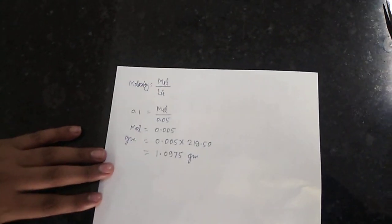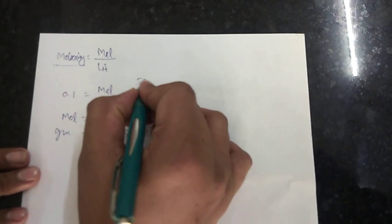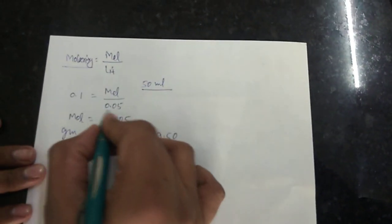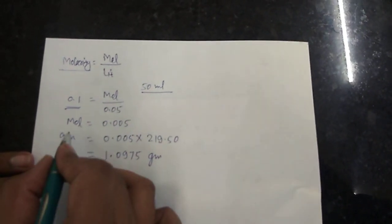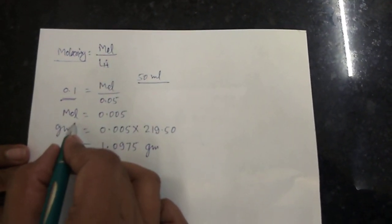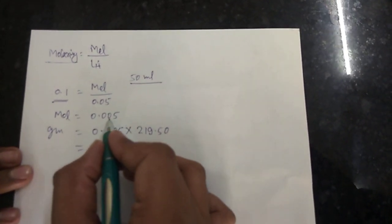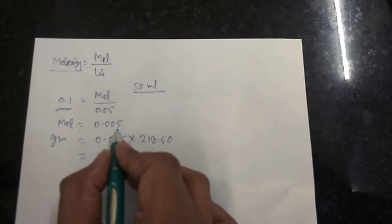Let's start with the calculation part. To find how many grams are required, we use the molarity calculation: molarity equals moles per liter. Since I am taking 50 ml, converting to liters gives 0.05 L. For a 0.1 molarity solution, cross multiplication gives the number of moles of zinc acetate required as 0.005 mol.